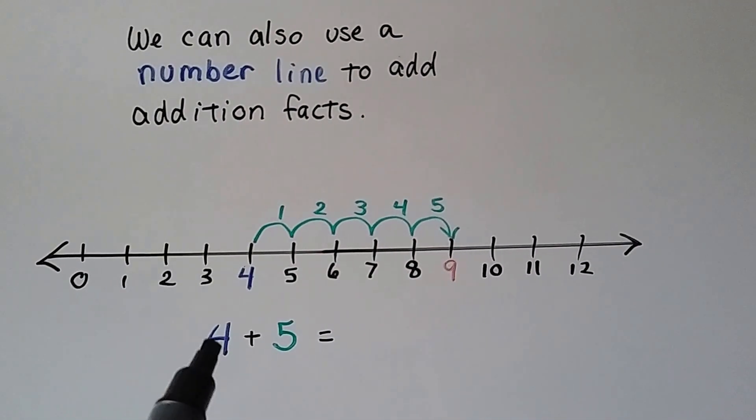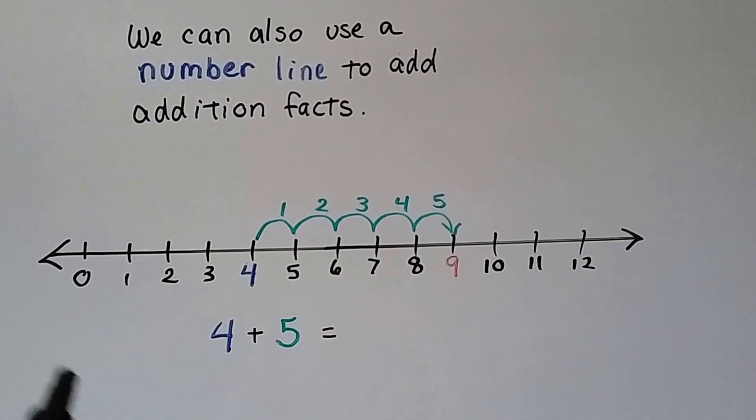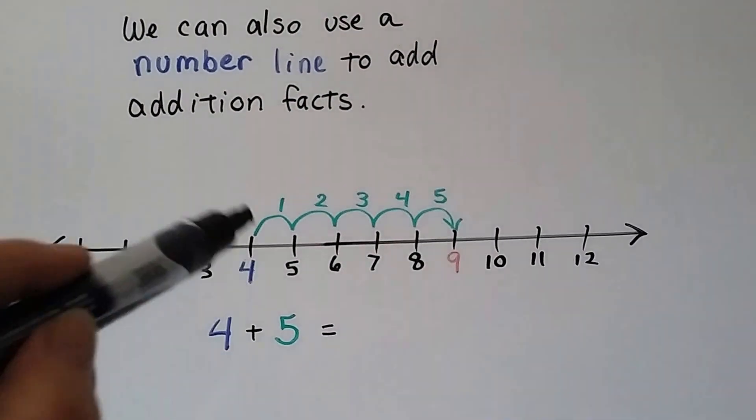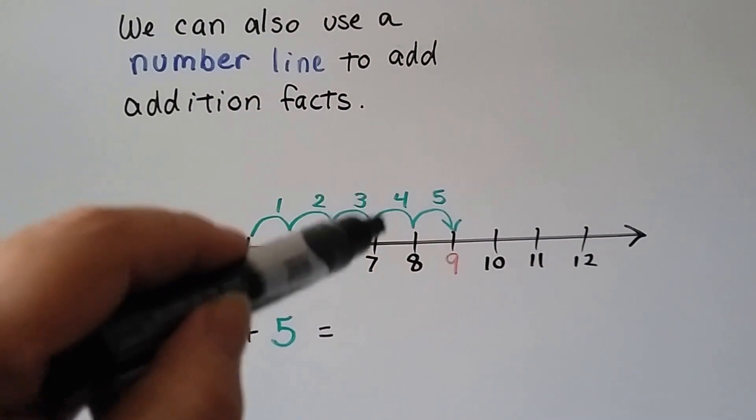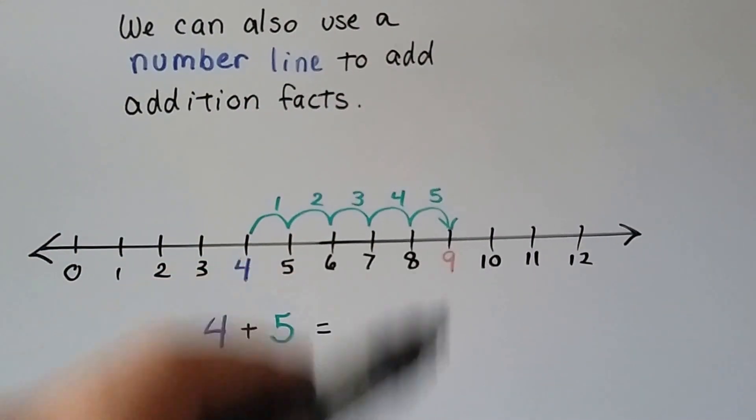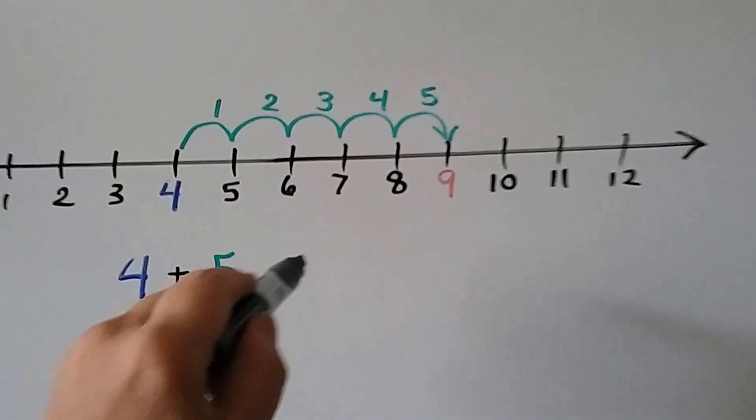So if we're going to do 4 plus 5, we find the 4. It's right here. And we do 5 hops. We go from the 4 and we go 1, 2, 3, 4, 5 hops. It lands on the 9 so we know it's 9.